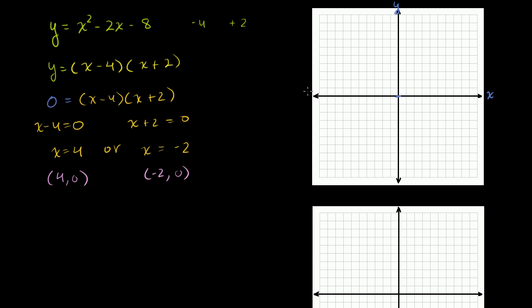Let's graph them. So 4 comma 0 — that's right there. And then the other point is negative 2 comma 0 — right there. So those are the two points where we intersect the x-axis.